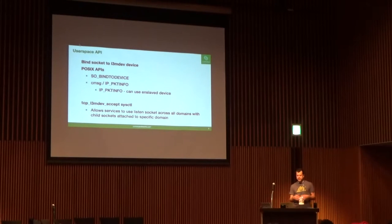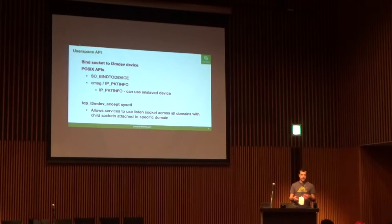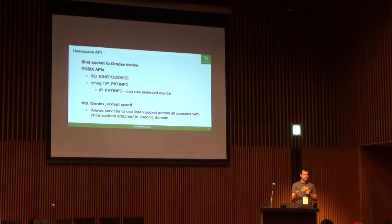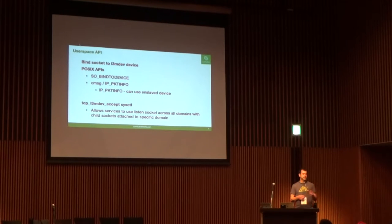For the user space API, because we've used the NET device construct, we have existing POSIX APIs like SO_BINDTODEVICE and the cmsg with IP_PKTINFO as a way for an application to specify what domain is of interest when sending a packet. For example, if you have a global TCP server with a child socket bound to a specific domain, it can do a GETSOCKOPT on that FD to see which domain that socket is tied to. Or it can use IP_PKTINFO to retrieve that for UDP and raw sockets — in those cases, the original ingress device is saved and passed to the application.